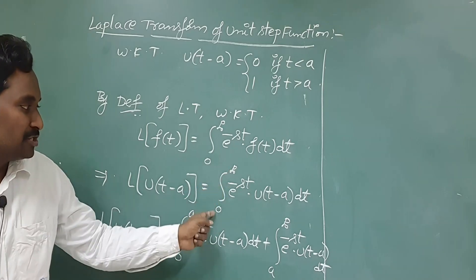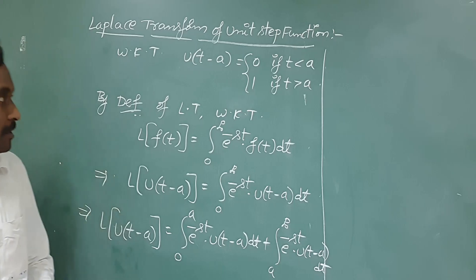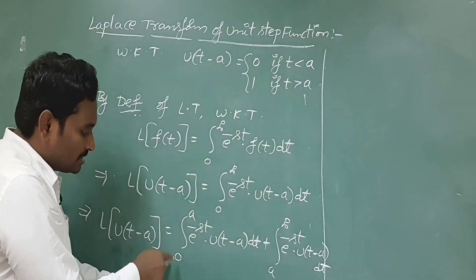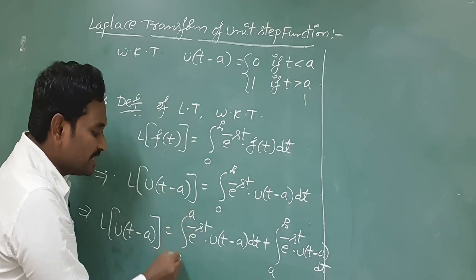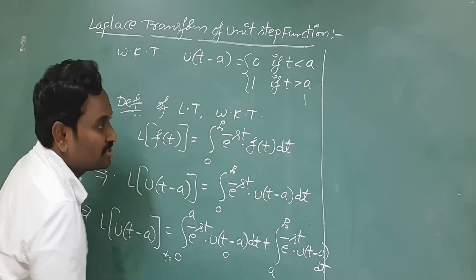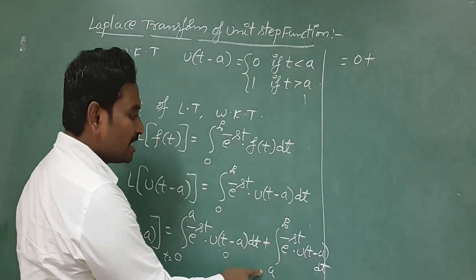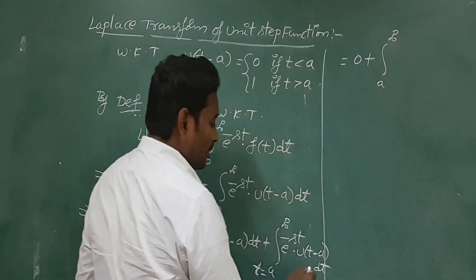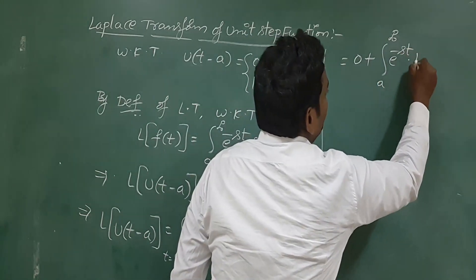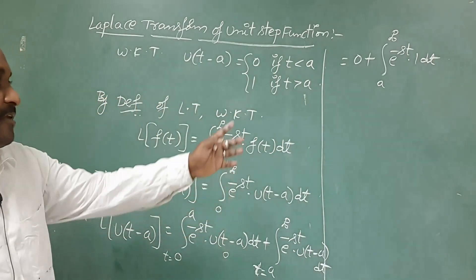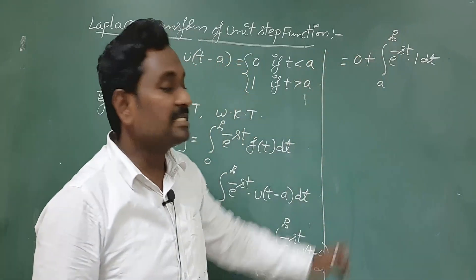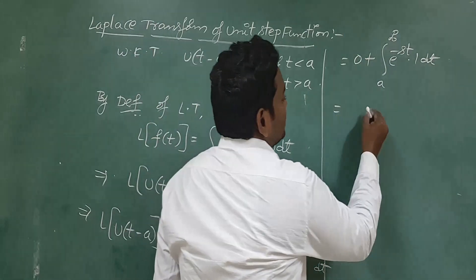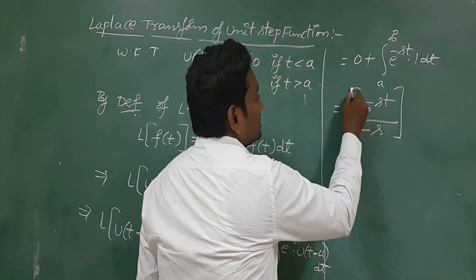According to the definition of the unit step function, if t is less than a, the function equals 0. In the first part, t varies from 0 to a, so u(t - a) = 0 and that integral becomes 0. In the second part, t crosses the value a, so we replace u(t - a) with 1, giving the integral from a to infinity of e^(-st) dt. The result is e^(-st) / (-s) evaluated from a to infinity.